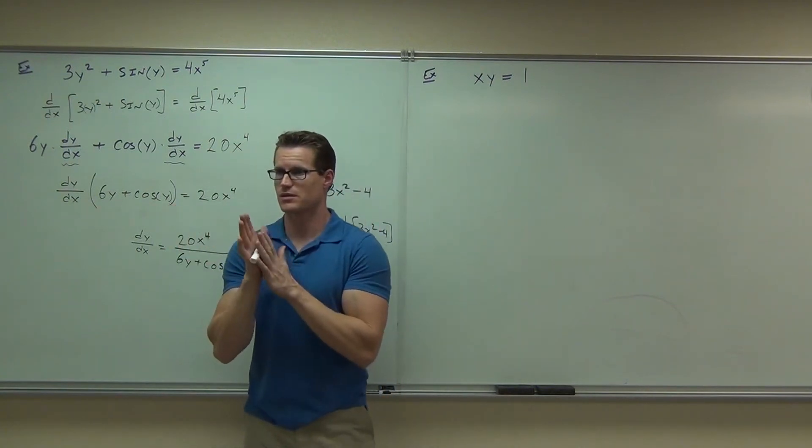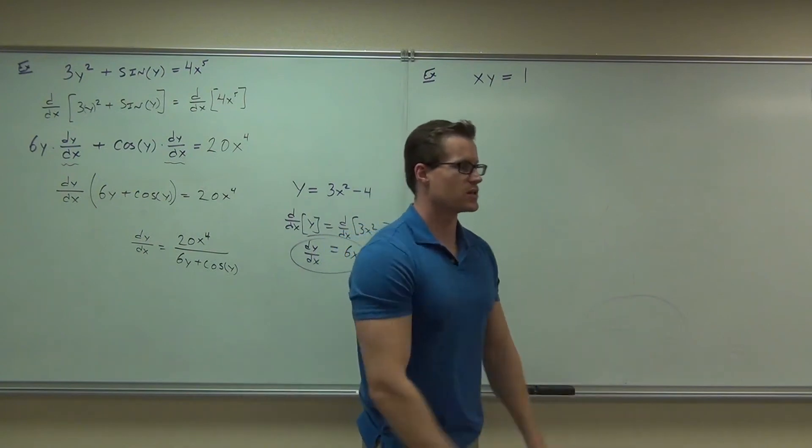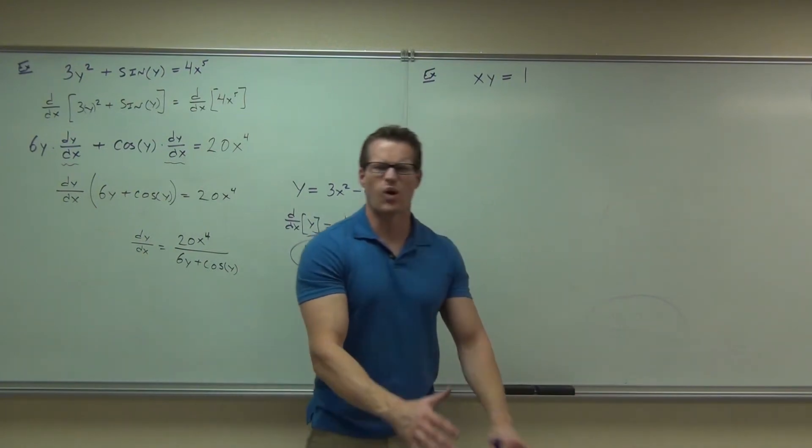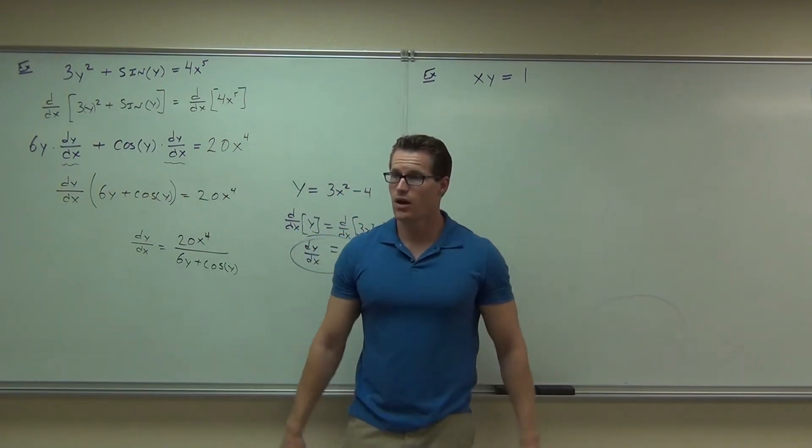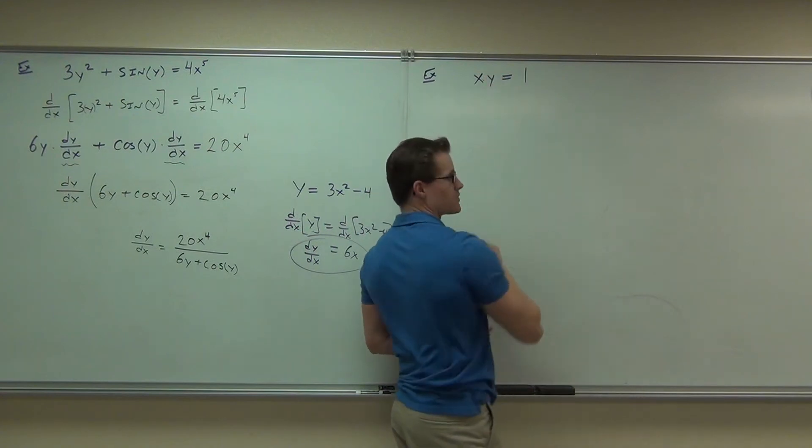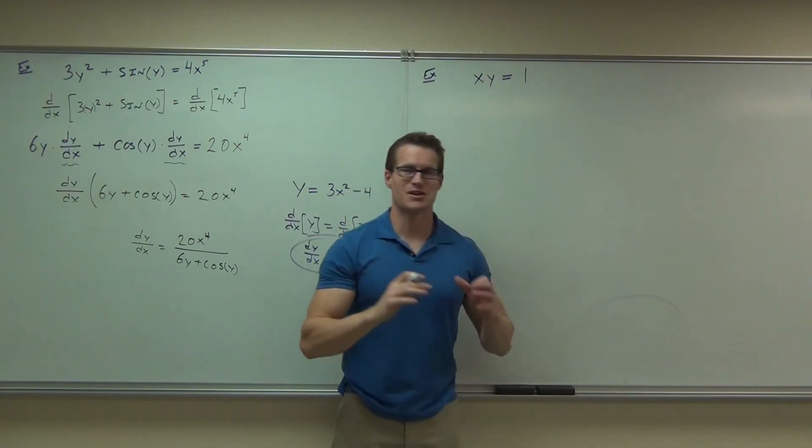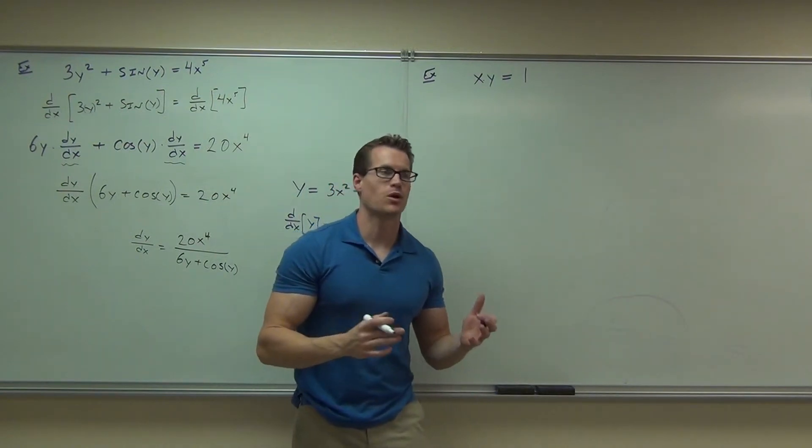What was this? Definitely implicit because the Y is not by itself. Can you take an implicit derivative of this? What is Y? A function of X. What happens when you take a derivative of X, which is a function of X, times Y, which is a function of X? You see the product rule? Got it. The product rule.